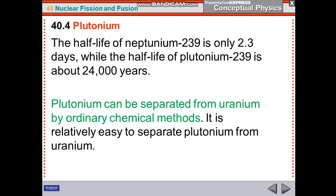It is relatively easy to separate plutonium from uranium. Plutonium is actually beneficial compared to uranium. If uranium can be made into plutonium, it can be easily separated compared to U-235.